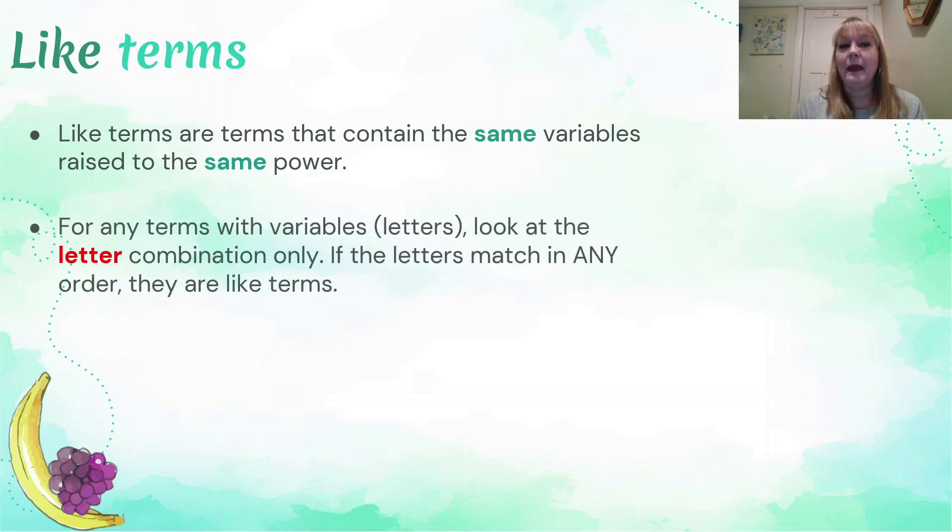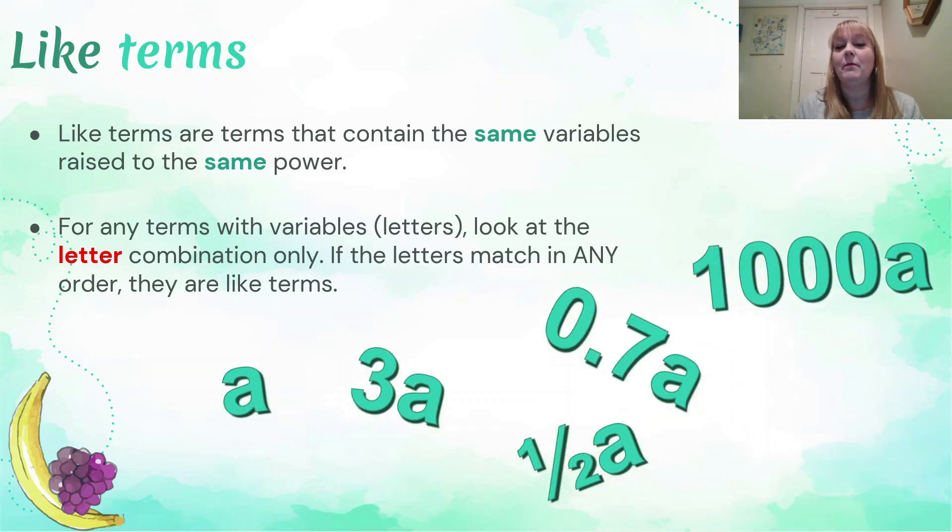Let's now look at what we mean by the same variable raised to the same power. For any terms, the best thing to do is just to look at the letter combination only. Don't worry about the number that's in the front, look at the letter combination, and those are your like terms. Here are some examples using the letter a. You could use any variable you want, but for example, an a by itself is a like term with 3a, with half an a, with 0.7 of an a, with a thousand a's, with a million a's. The number in front is not important. It's the letter behind that makes these all like terms. If you can get your head around that—that you're just looking for the letter combination, not the numbers—then you'll be home and hose with that one.